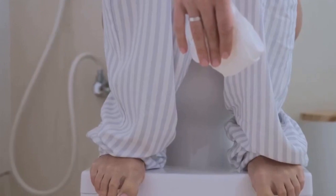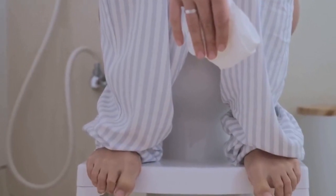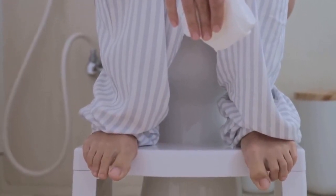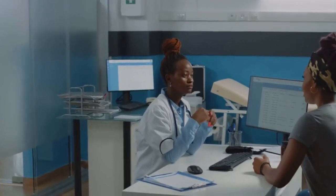Changes in stool or urine are also important to note. Stools might become pale, oily, or unusually foul-smelling. Urine, on the other hand, may darken and become the color of tea or cola, another result of excess bilirubin in the body.